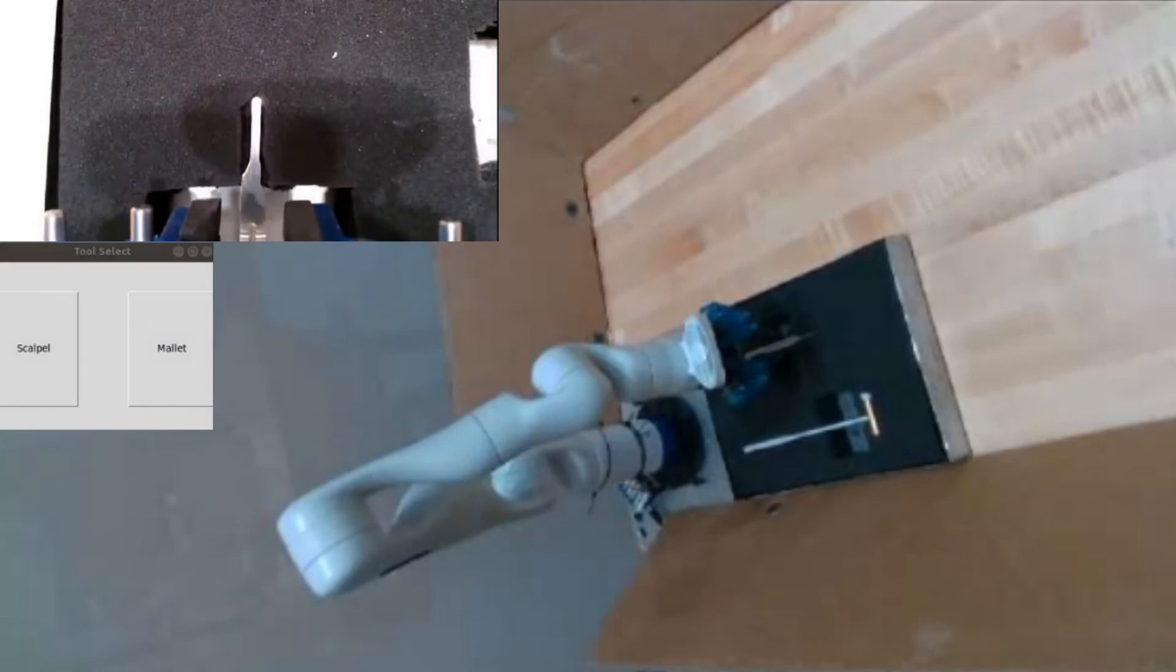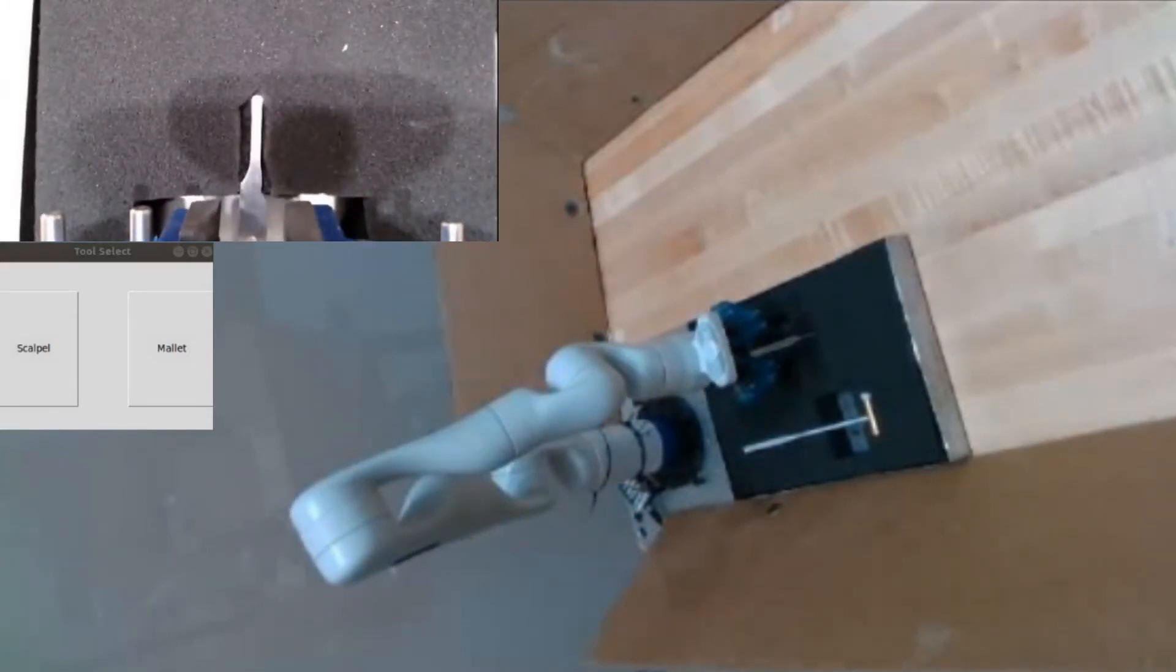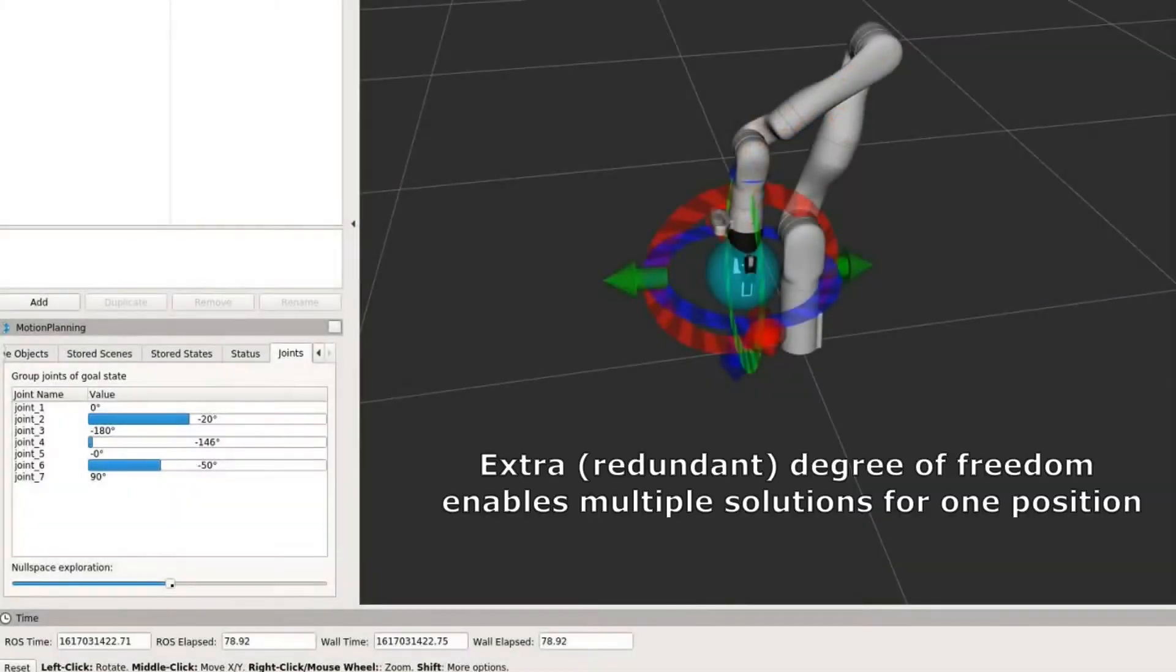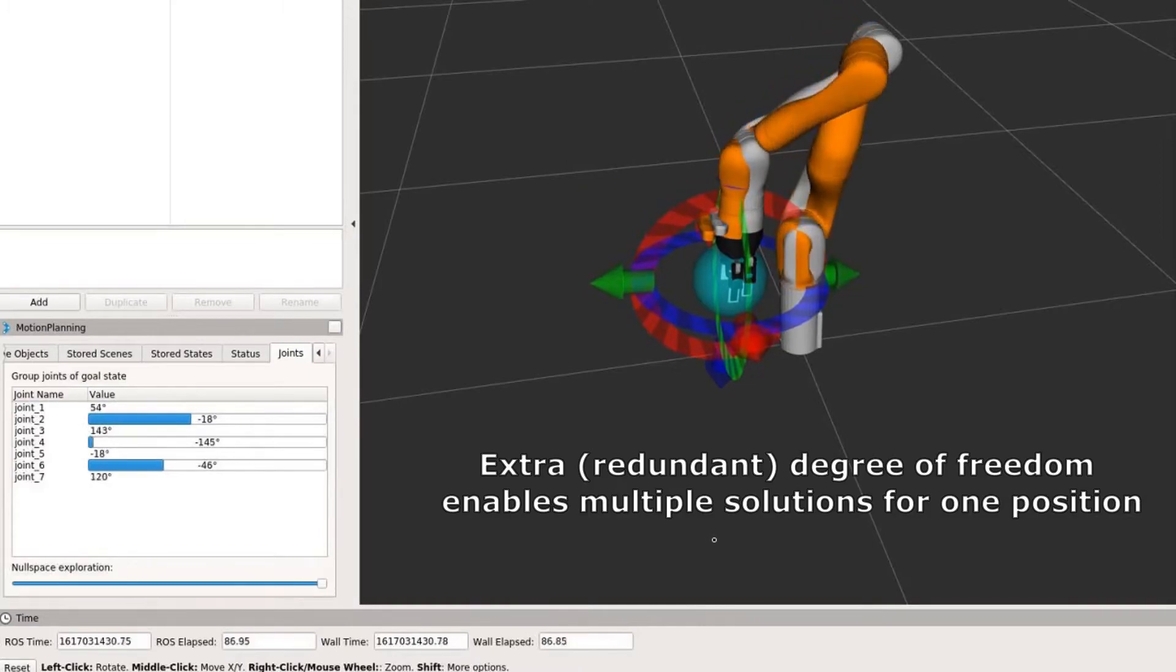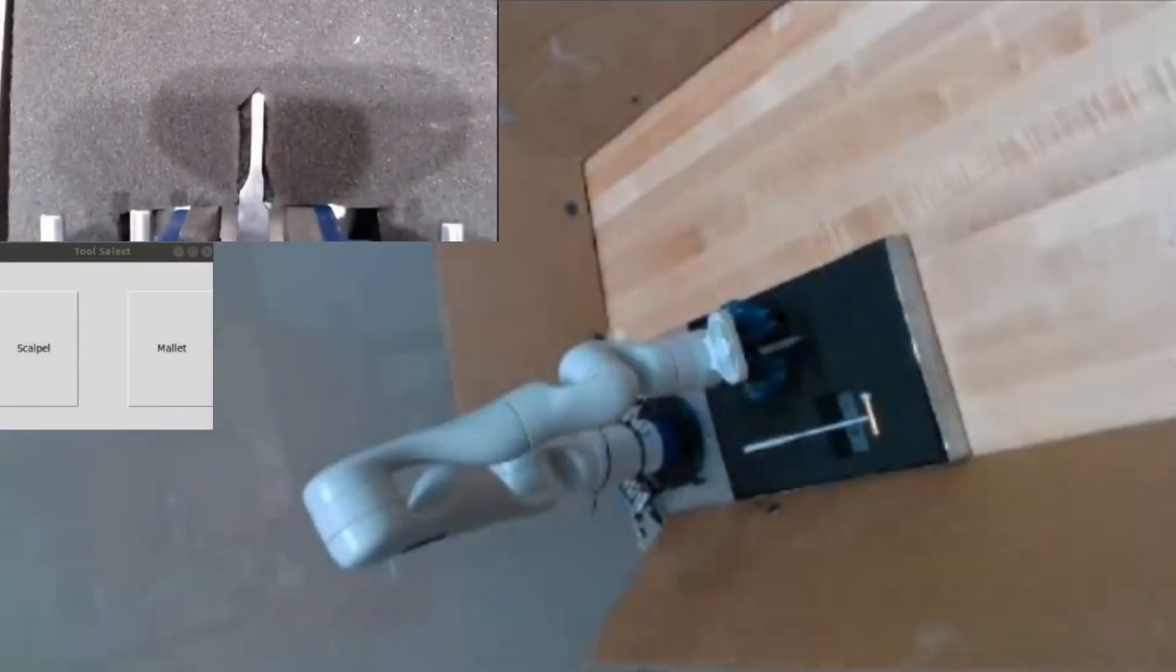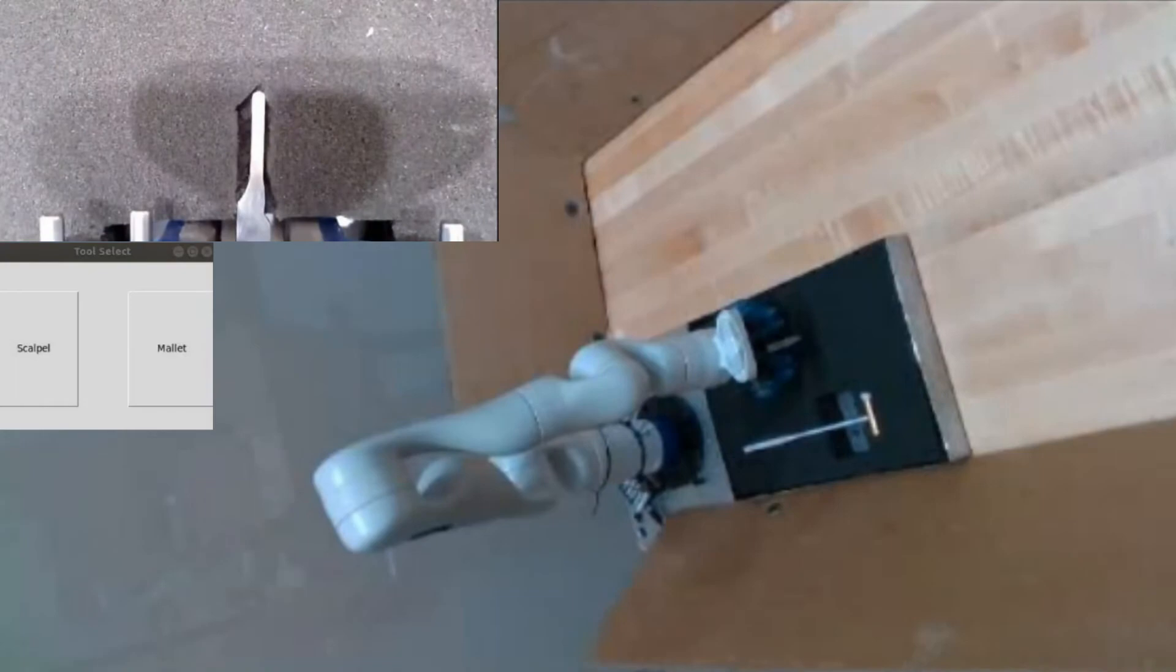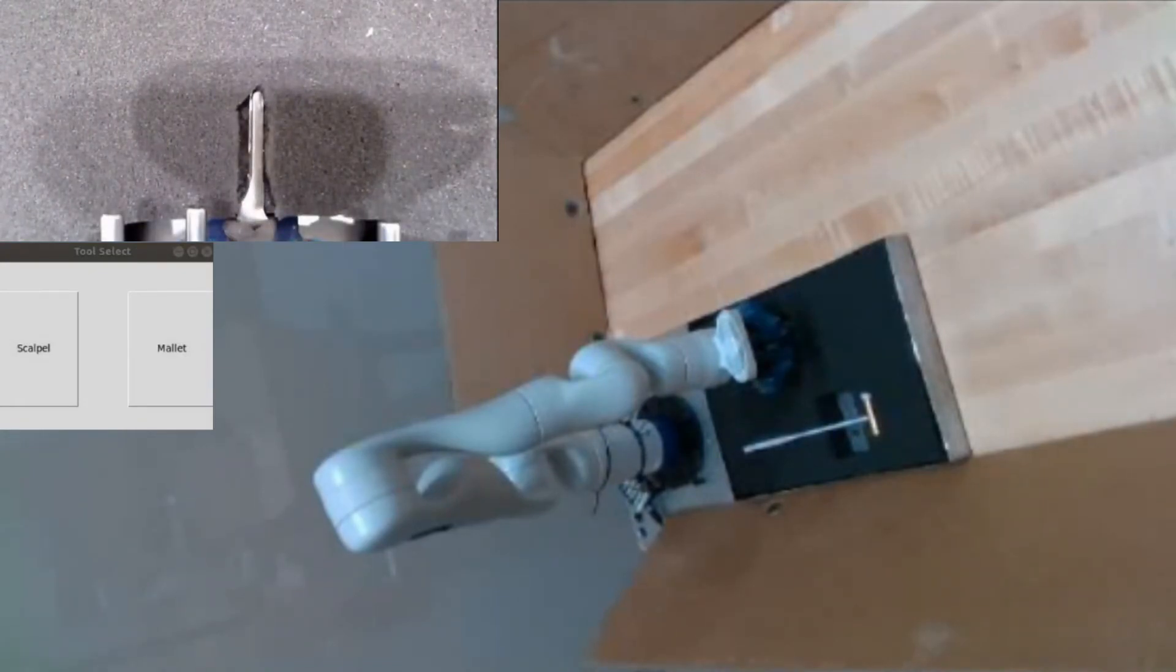Also, it is designed to be a collaborative robot which is safe for direct human interaction. Additionally, its redundancy allows for more flexibility in its movement. Considering the possibility of implementing the system in the operating room in the future, it will also be easy to switch to a Kinova manipulator that is medical grade.